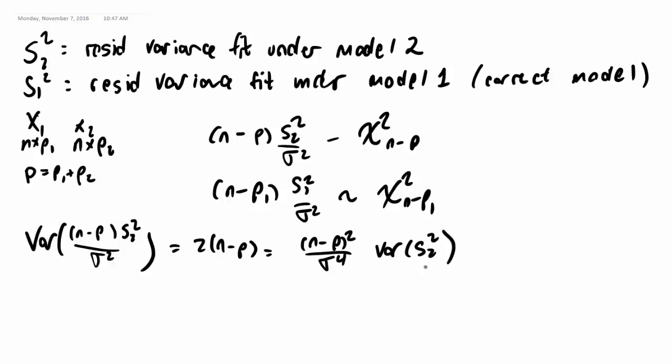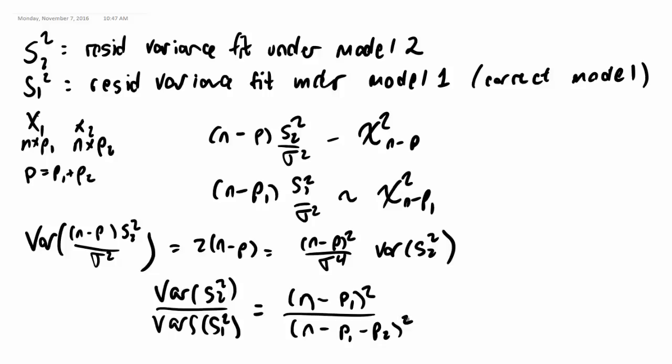So we can do the same calculation for the variance and find the variance of S1 squared. And then when we do that we can calculate what is the variance of S2 squared divided by the variance of S1 squared, in which case all the unknown parameters will drop out and we'll see that it's exactly N minus P1 squared over N minus P squared, which is N minus P1 minus P2 squared.